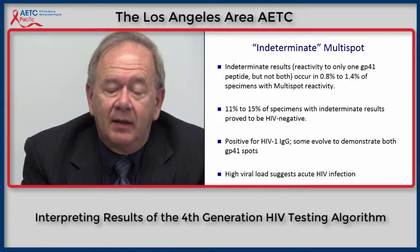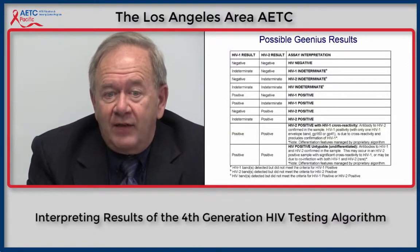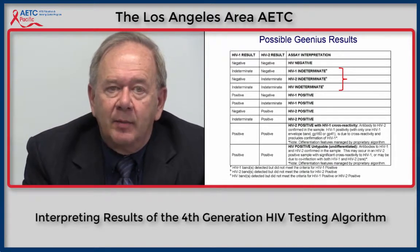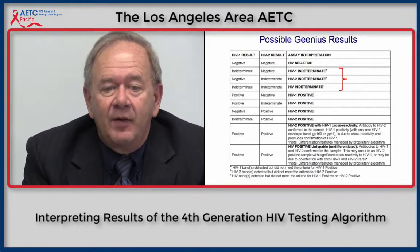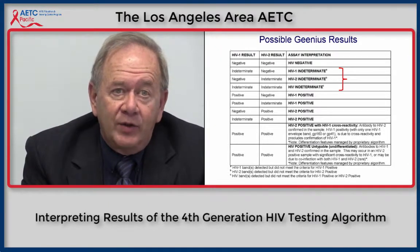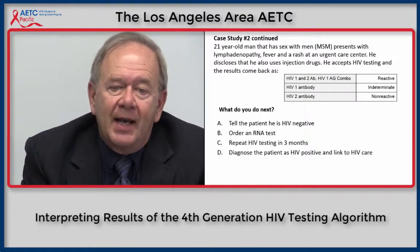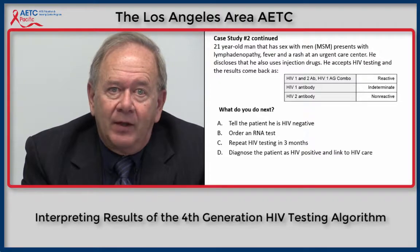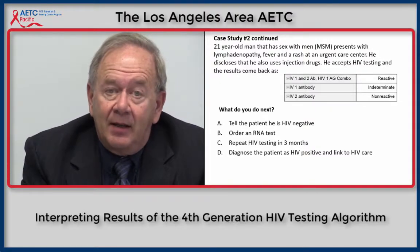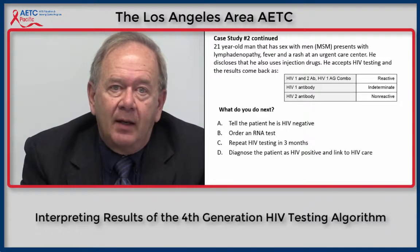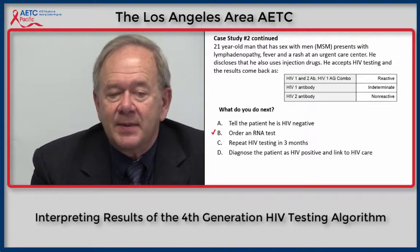A high viral load would suggest acute HIV infection. The Genios assay — the new HIV-1 differentiation assay — has a sequence of eight possible different test results, of which three give an indeterminate result: HIV-1 indeterminate, HIV-2 indeterminate, or HIV indeterminate. In all these circumstances, additional testing is required to resolve the meaning of the indeterminate result after a reactive fourth-generation assay. For this individual with a reactive fourth-generation assay and an indeterminate antibody test, the next step is B — order an RNA test. You would not tell the patient he's HIV negative, repeat testing in three months, or diagnose him as HIV positive without further testing.